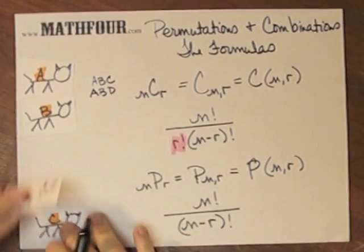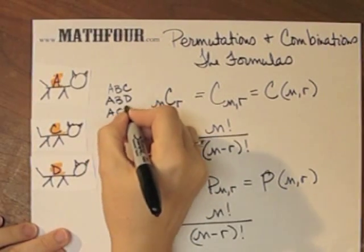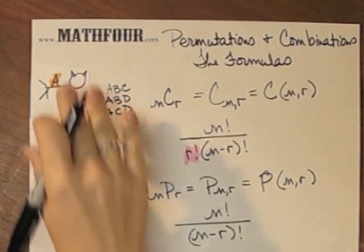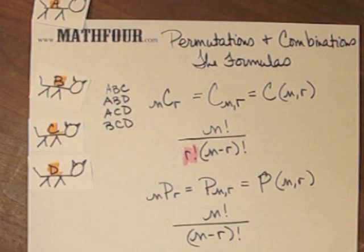Marker's running out. I could do A, C, D. Or I could do B, C, D. And I only have four.